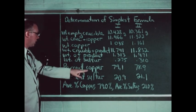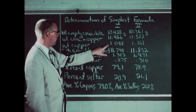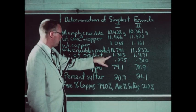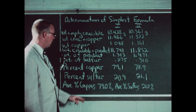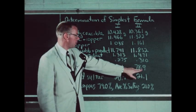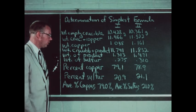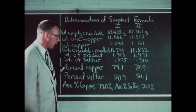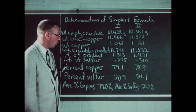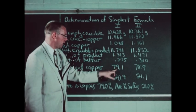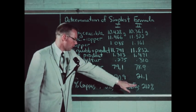With this information we can calculate the percent of copper and sulfur in the sample. The percent of copper is obtained by dividing the weight of copper by the weight of product — 1.038 by 1.313, or 1.161 by 1.471. The percent of copper in the two samples comes out to 79.1 and 78.9, a pretty close check. The percent of sulfur calculated similarly comes out to 20.9 and 21.1. The average percent of copper is 79.0 and the average percent of sulfur is 21.0.